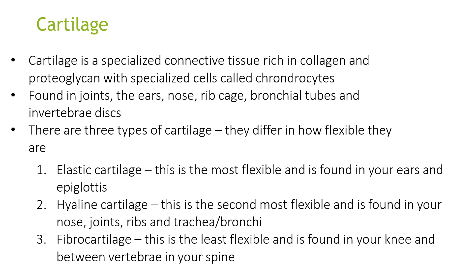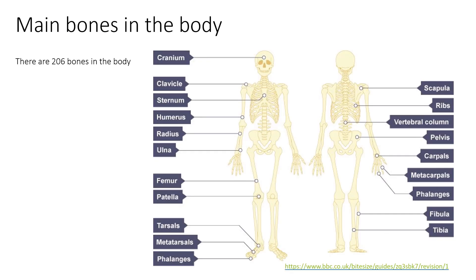There are three types of cartilage with different flexibility. The first is elastic, the second is hyaline and the third is fibrocartilage. Elastic cartilage is the most flexible and is found in your ears and epiglottis. Hyaline cartilage is the second most flexible and is found in your nose, joints, ribs and trachea and bronchi. Fibrocartilage is the least flexible and is found in your knee and between the vertebrae of your spine.